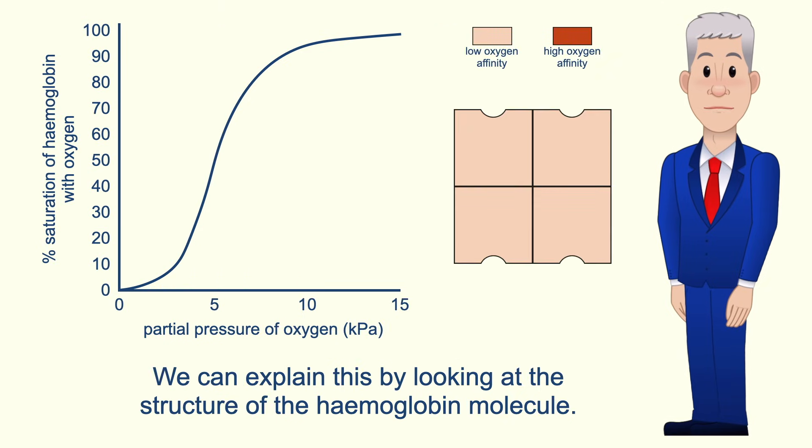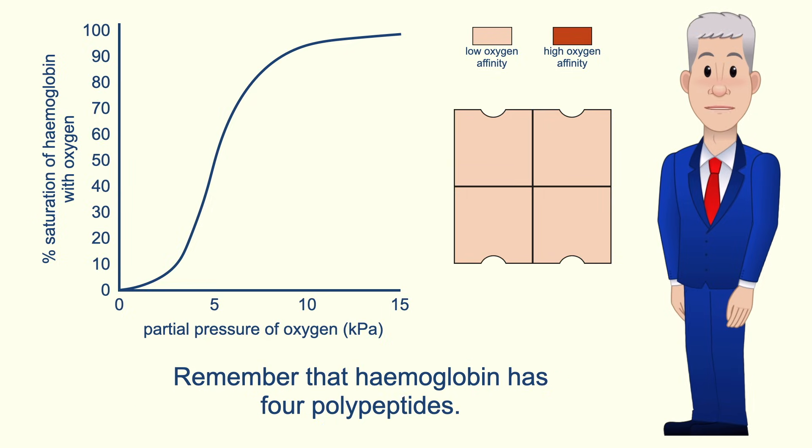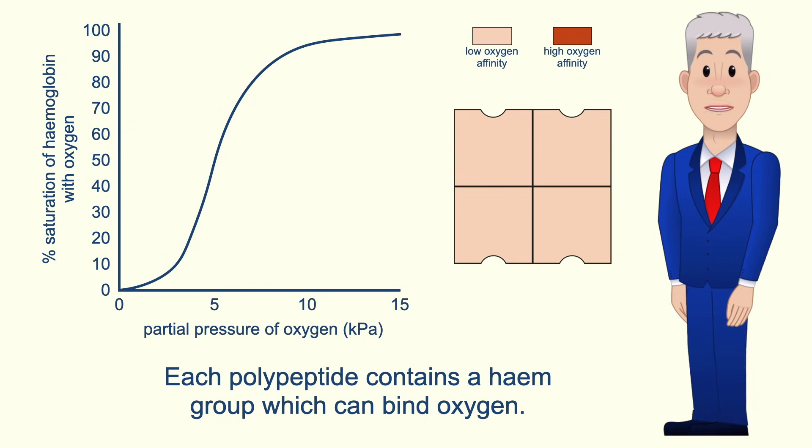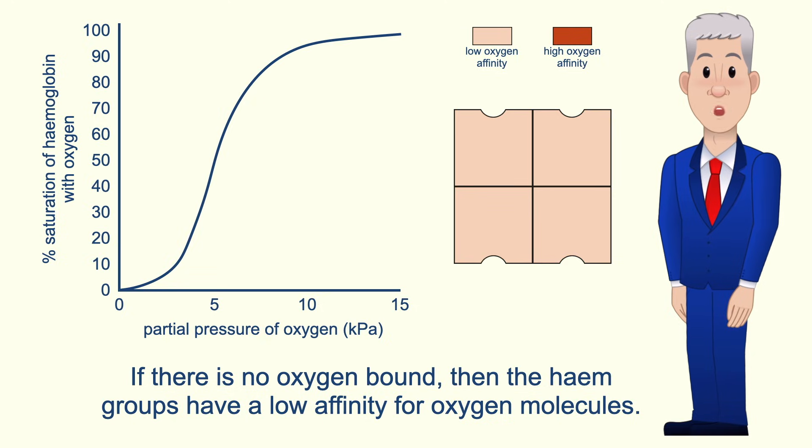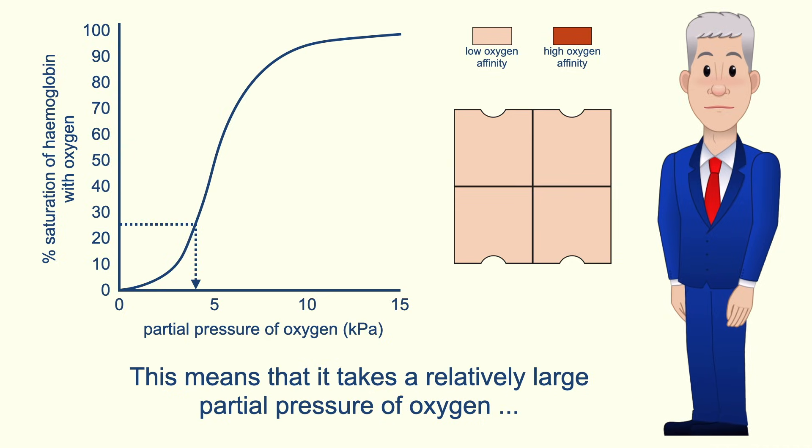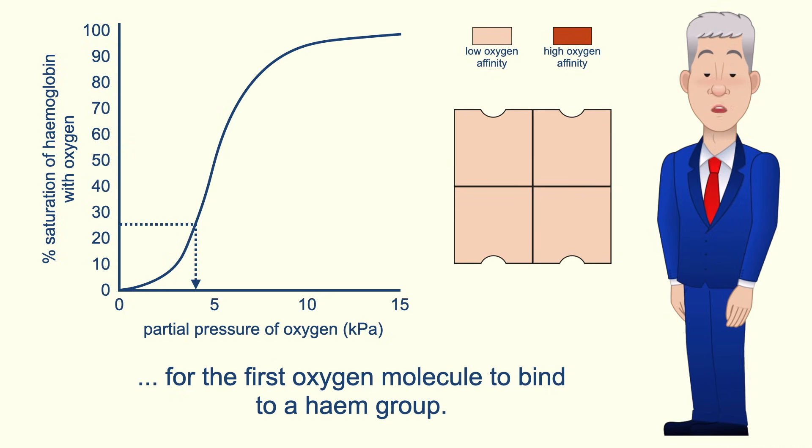Now we can explain this by looking at the structure of the haemoglobin molecule. Remember that haemoglobin has four polypeptides and each polypeptide contains a haem group which can bind oxygen. If there's no oxygen bound, then the haem groups have a low affinity for oxygen molecules. This means that it takes a relatively large partial pressure of oxygen for the first oxygen molecule to bind to a haem group.